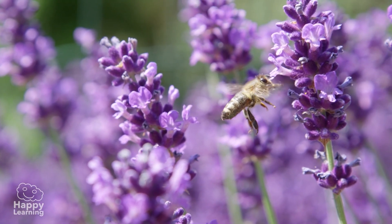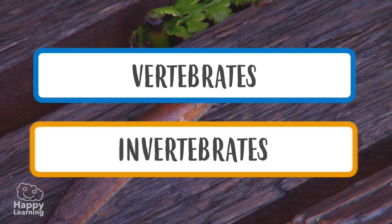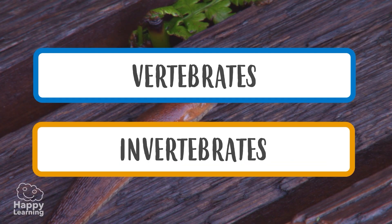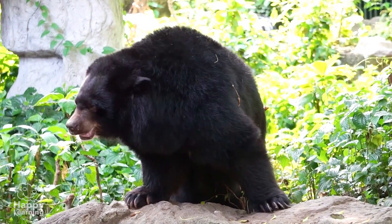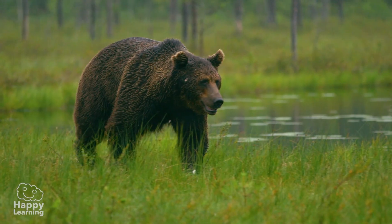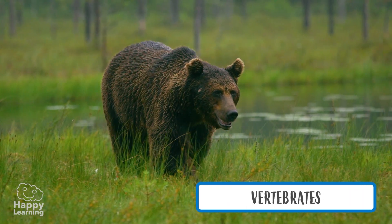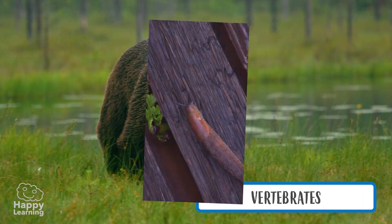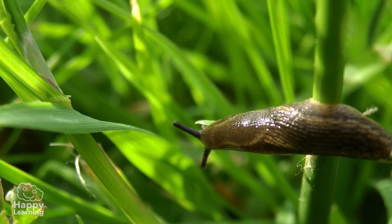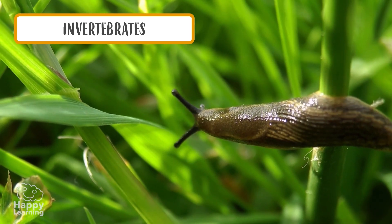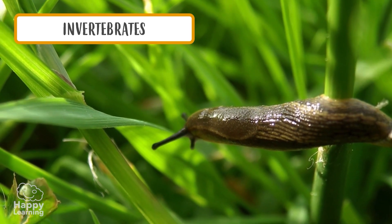Now let's see if we can distinguish which animals are vertebrates and which are invertebrates. Is this dancing bear a vertebrate or invertebrate? Of course, bears are vertebrate animals — they have bones and they are also mammals. What about this slug? Slugs are invertebrate animals. They are mollusks — they have no bones and are very soft.